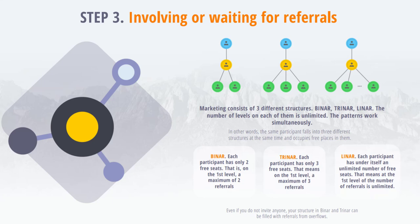Biner: each member has only two free places, that is, at the first level, a maximum of two referrals. Triner: each member has only three available places, that is, at the first level, a maximum of three referrals. Lina: each member has an unlimited number of available places, that is, at the first level, the number of referrals is unlimited.